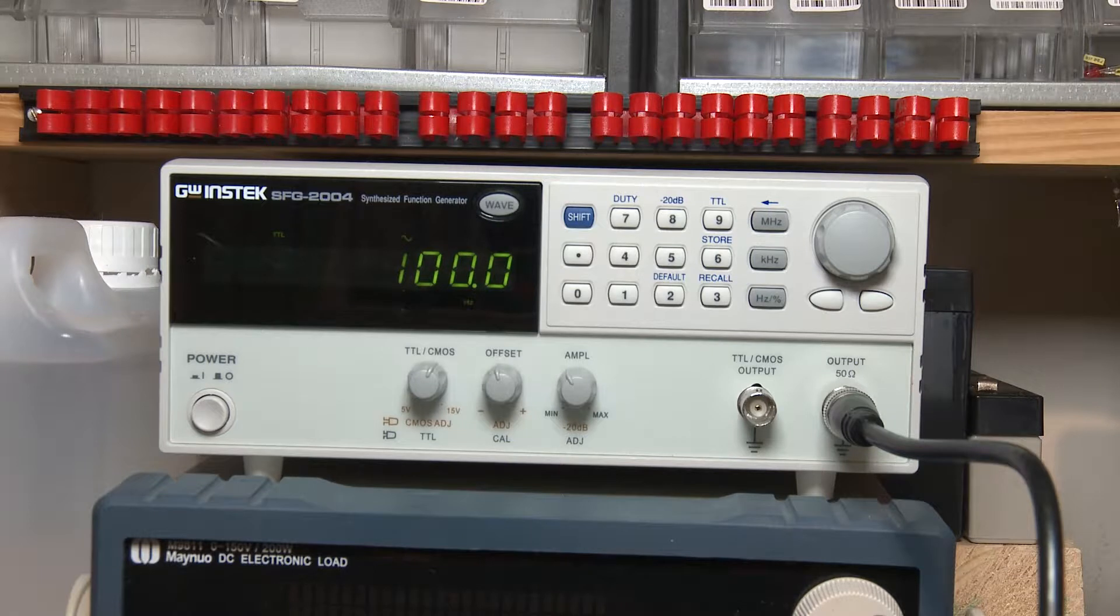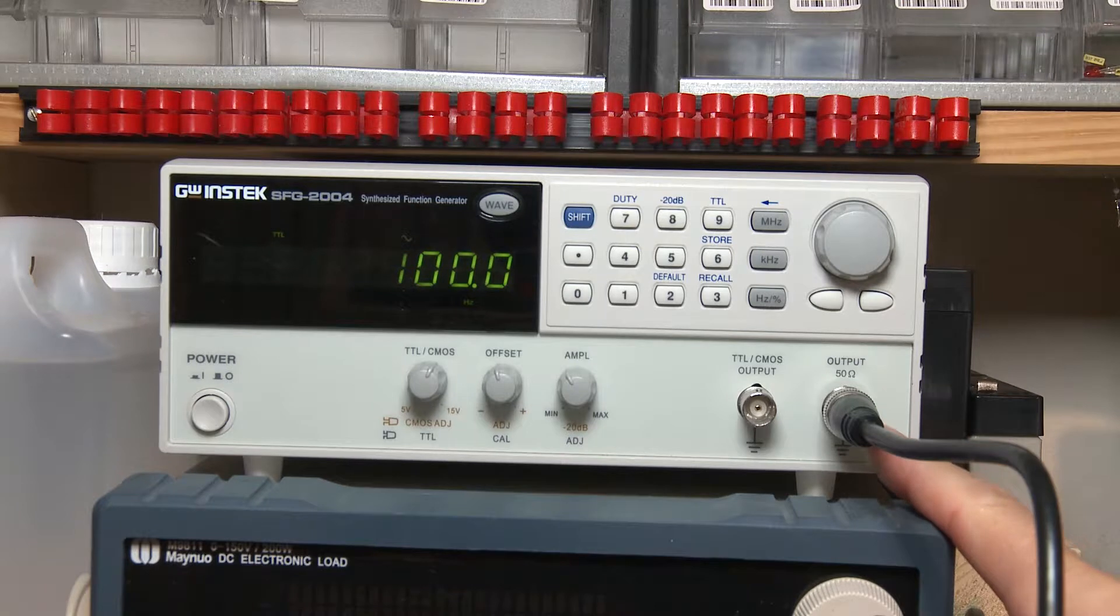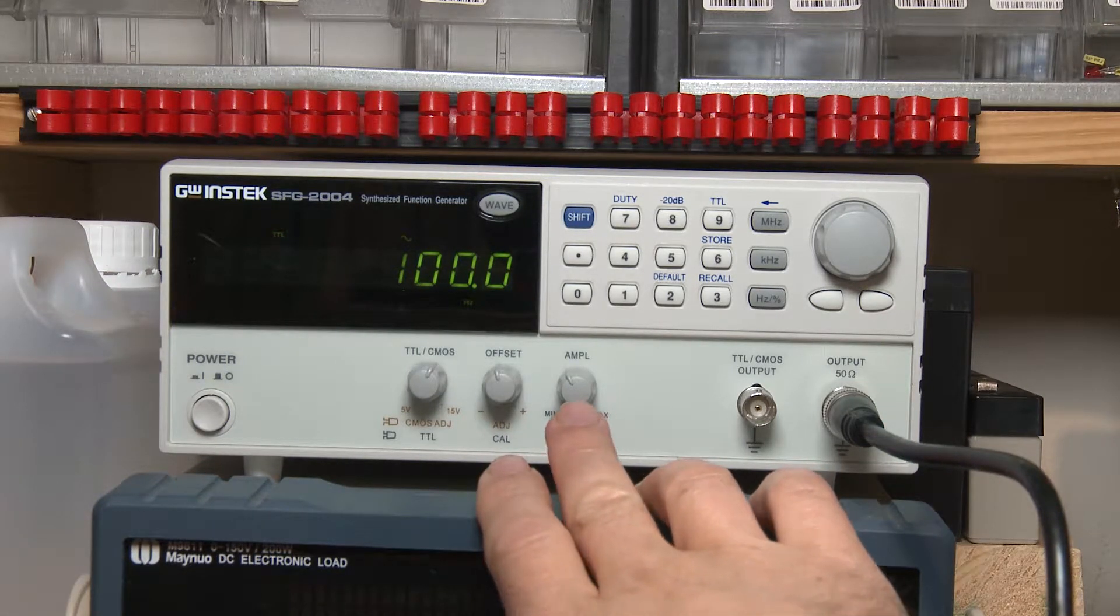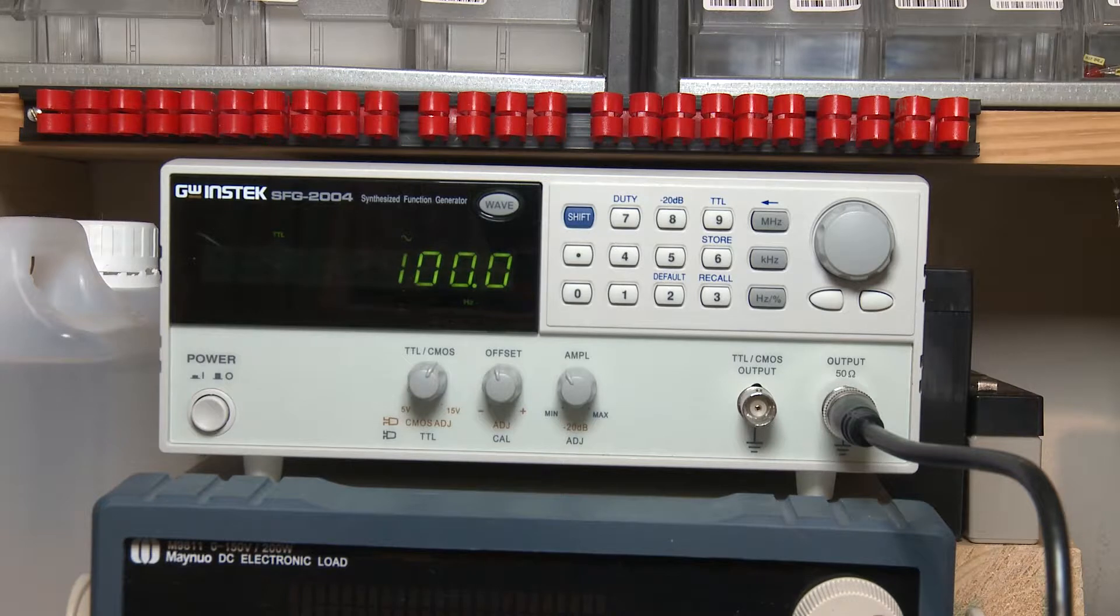I'll set this to 100 hertz and I'm using the normal output, the 50 ohm output. This is so that I can adjust the amount of voltage coming out. This is set at a normal voltage around three, three and a half volts for this LCD, but it just gives me some nice control over it.